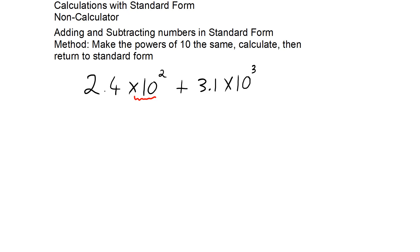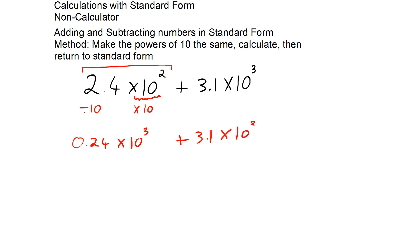So for the power of 10 with a 2, I'm going to multiply by 10. And then to keep the whole number 2.4 times 10 to the 2 the same, I'm going to divide the 2.4 by 10 to keep the number balanced. This gives 0.24 times 10 to the power of 3, and I'm adding 3.1 times 10 to the 3. Because I now have everything in terms of 10 to the power of 3, I can just add the number parts: 0.24 plus 3.1 equals 3.34 times 10 to the power of 3.